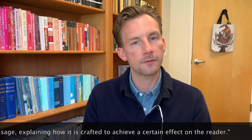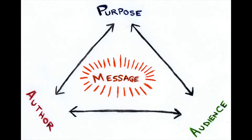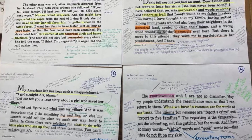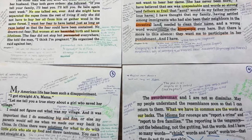Probably the most important sentence in the prompt is where students are directed to interpret the passage, explaining how it is crafted to achieve a certain effect on the reader. Why the phrase 'effect on the reader'? This is the language of rhetorical analysis. In the rhetorical model of communication, texts are meant to persuade an audience, changing their thinking or moving them to action. Students need this lens to get underneath the language and see the layers of meaning — to do more than restate the plain meaning, by thinking about how details in the passage are purposefully chosen to make the reader think and feel a certain way.